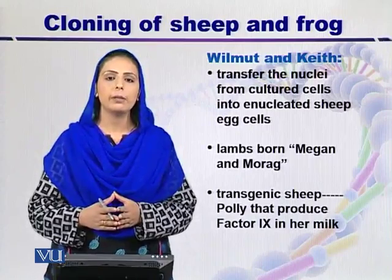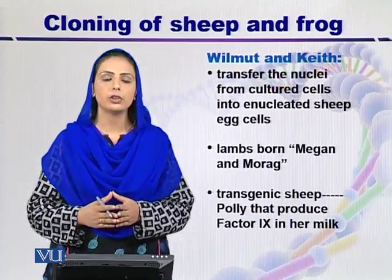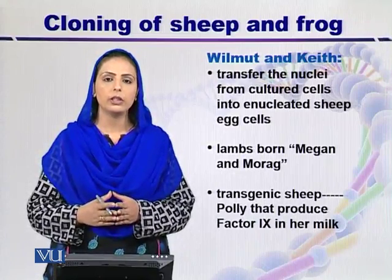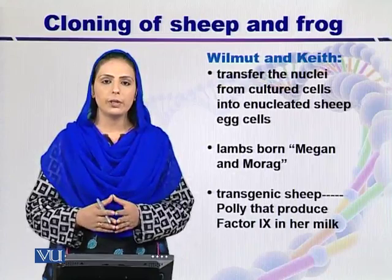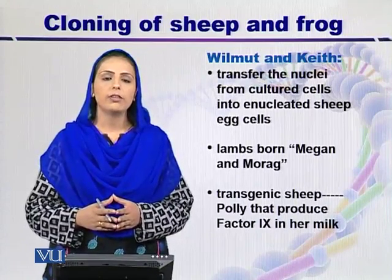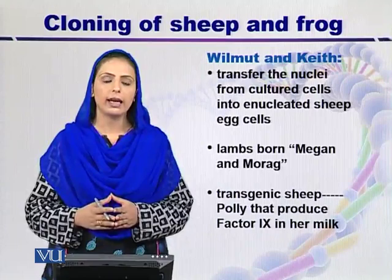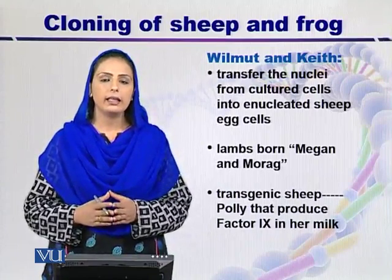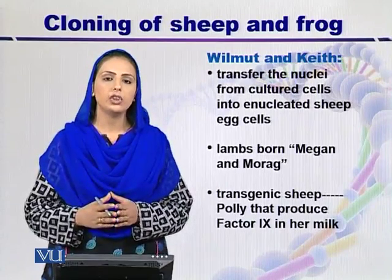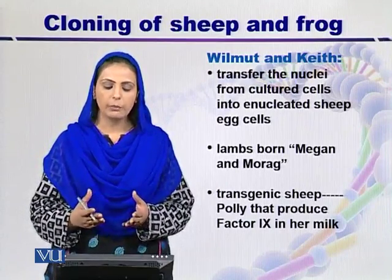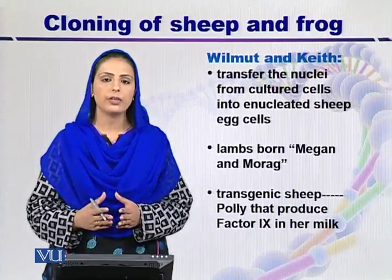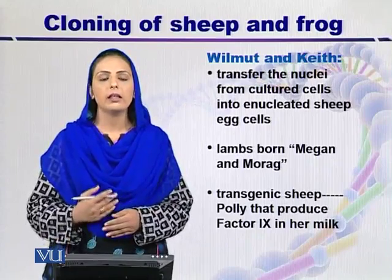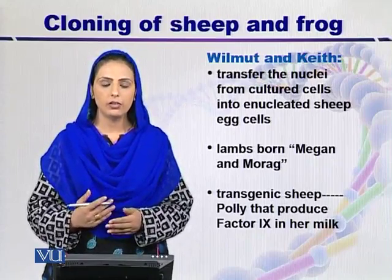These transgenic sheep were also produced for other purposes. For example, the gene responsible for the production of Factor 9 was inserted into the sheep. Factor 9 is a blood clotting protein used to treat hemophilia. Wilmut and Keith inserted the Factor 9 gene into a sheep named Polly, which produced Factor 9 in her milk, creating another transgenic sheep.